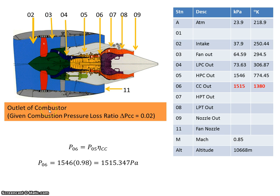One of the parameters we were given at the start was that the combustion pressure loss was 0.02. Therefore, we are going to get 98% of the input pressure on the output side. So pressure 06, the output of the combustion can, that is going to be 98% of 1546. This is our 1546 here, so when I multiply that out I get 1515.34.